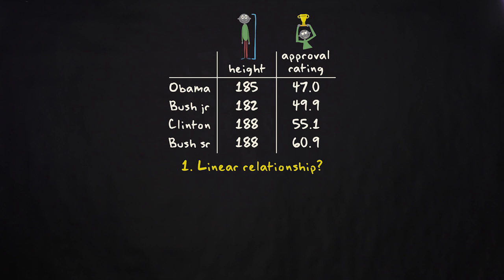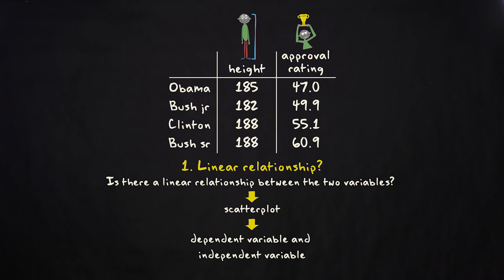Let's start with the first question. Is there a linear relationship between the two variables? To answer that question, we make a scatterplot. To make a scatterplot, you must first decide what's the dependent variable and what's the independent variable.